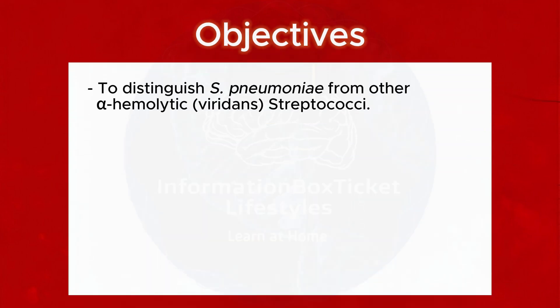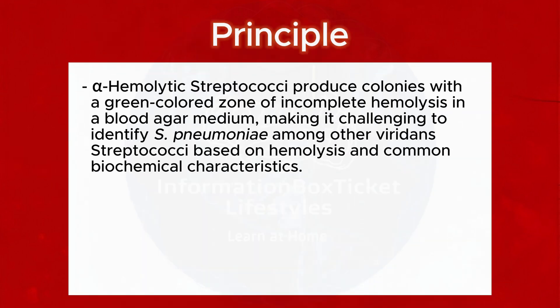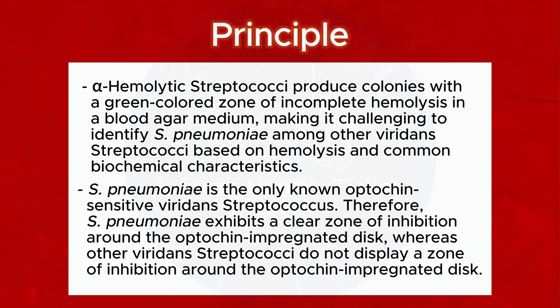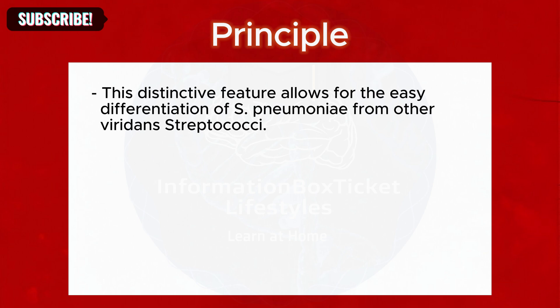Objectives: To distinguish S. pneumoniae from other alpha-hemolytic viridans streptococci. Principle: Alpha-hemolytic streptococci produce colonies with a green-colored zone of incomplete hemolysis in a blood agar medium, making it challenging to identify S. pneumoniae among other viridans streptococci based on hemolysis and common biochemical characteristics. S. pneumoniae is the only known Optochin-sensitive viridans streptococcus. Therefore, S. pneumoniae exhibits a clear zone of inhibition around the Optochin-impregnated disc, whereas other viridans streptococci do not. This distinctive feature allows for the easy differentiation of S. pneumoniae from other viridans streptococci.